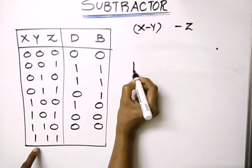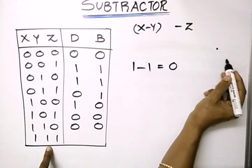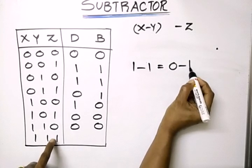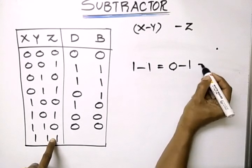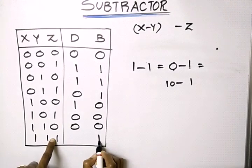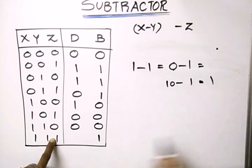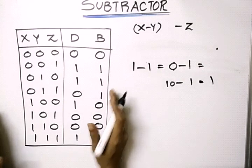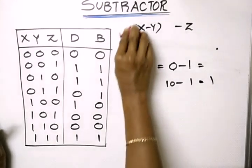For the final combination, X=1, Y=1, Z=1: 1 minus 1 gives result 0 with borrow 0. Then we subtract Z=1 from this result: 0 minus 1 requires a borrow, so borrow is 1, and 10 minus 1 equals 1. The difference is 1. This completes the truth table of the full subtractor.